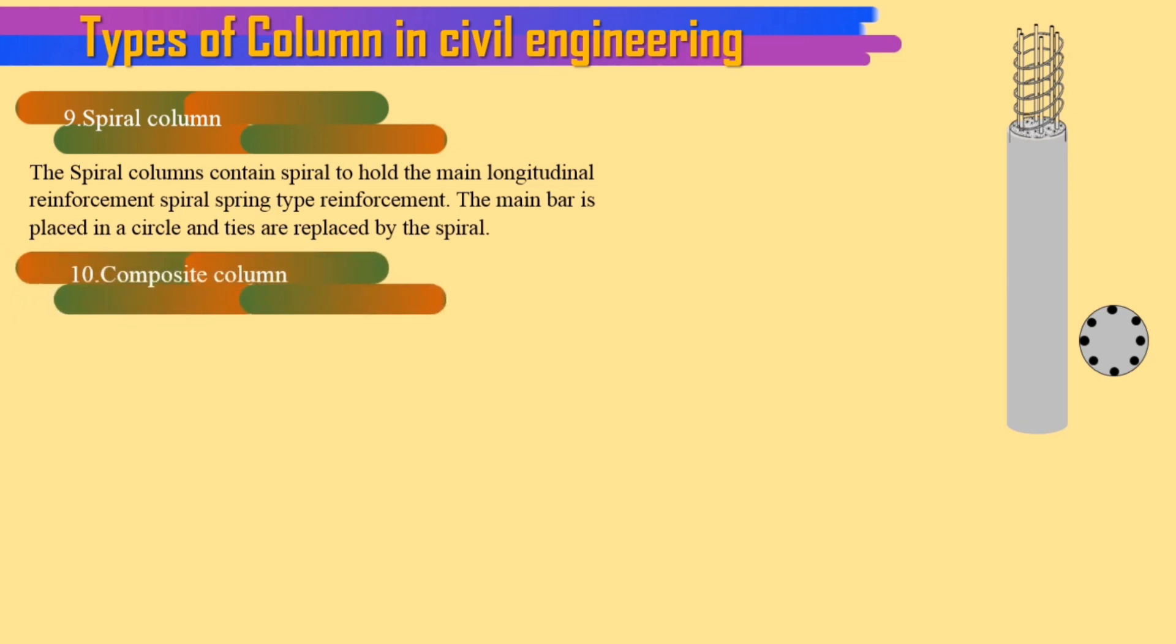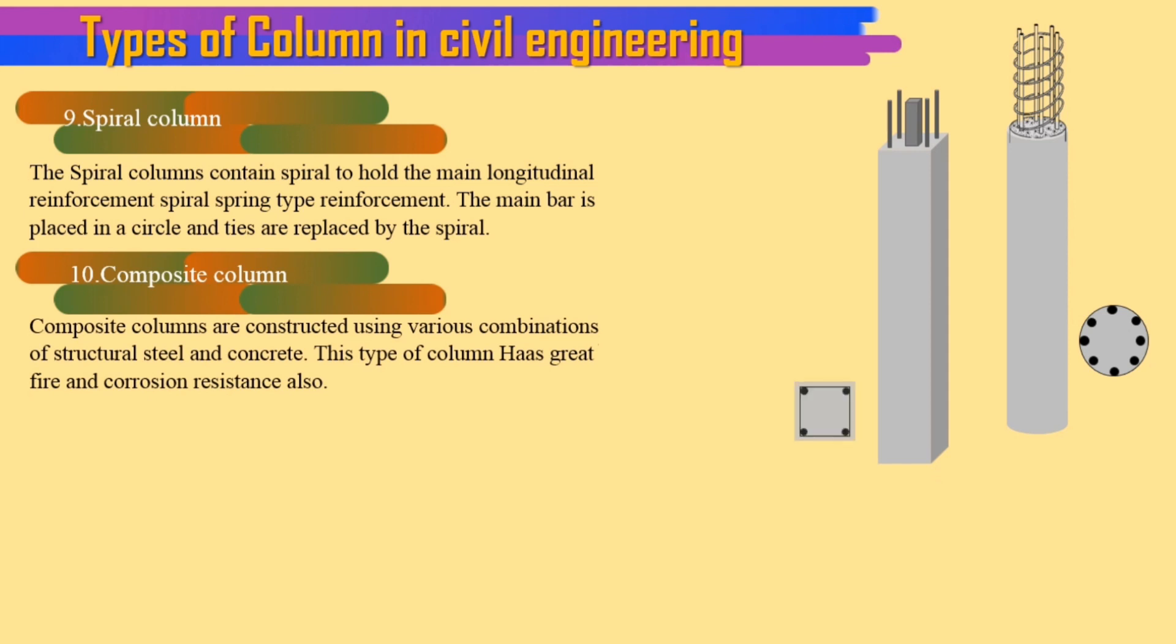10. Composite column. Composite columns are constructed using various combinations of structural steel and concrete. This type of column has great fire and corrosion resistance also.